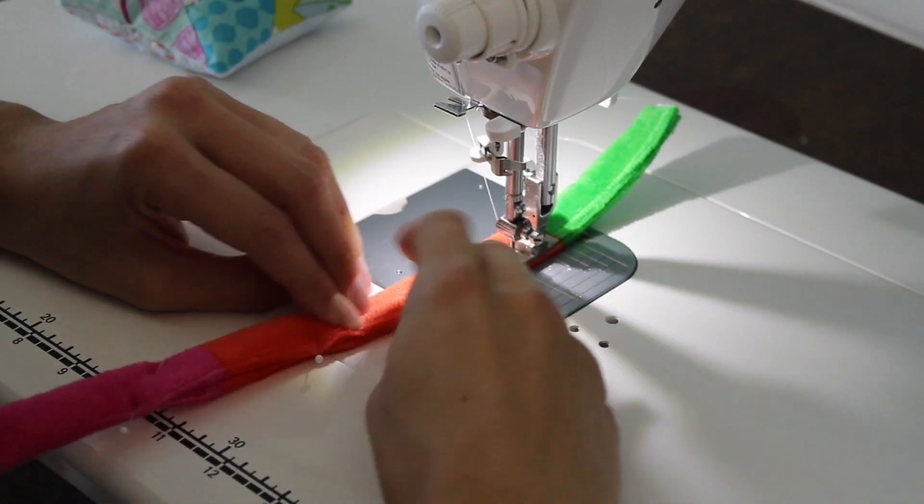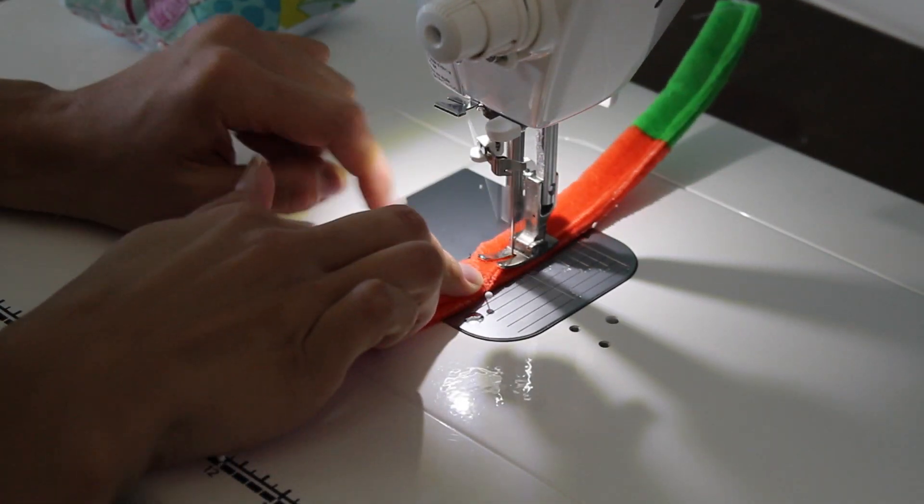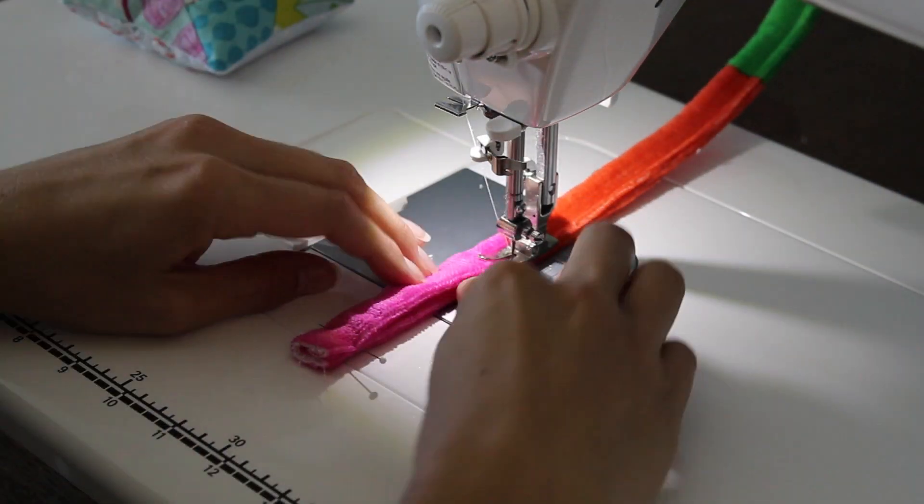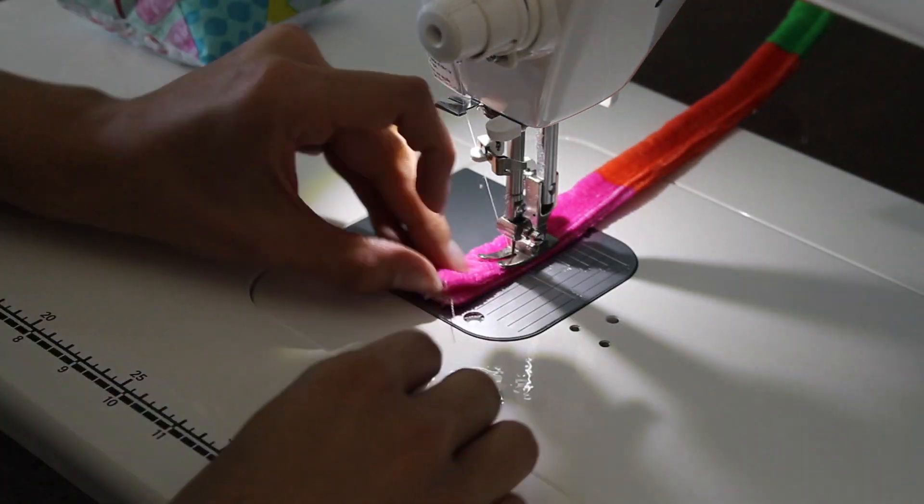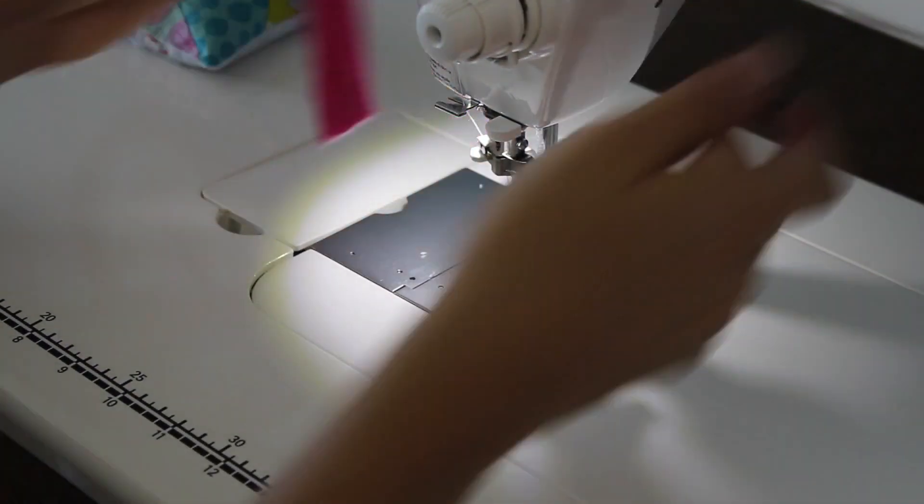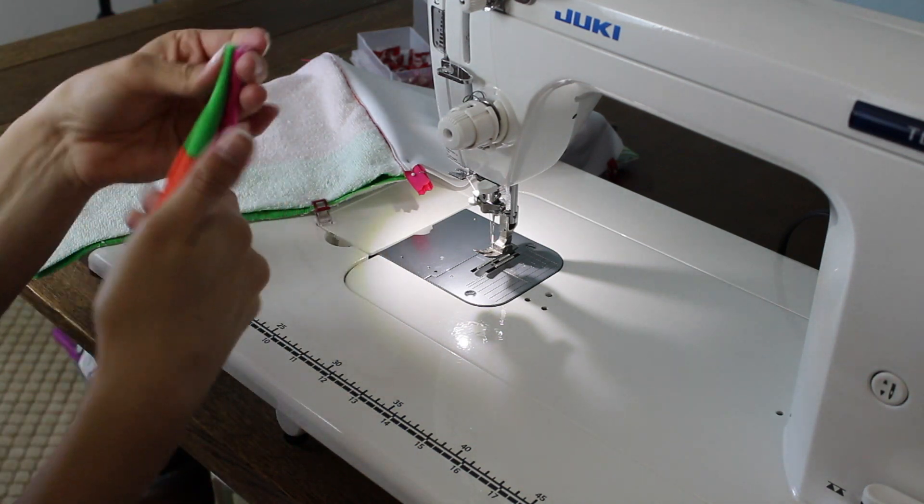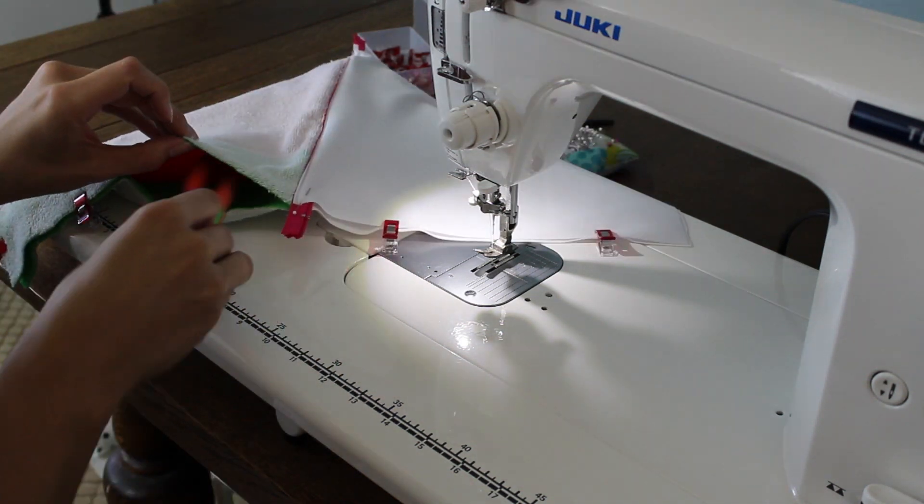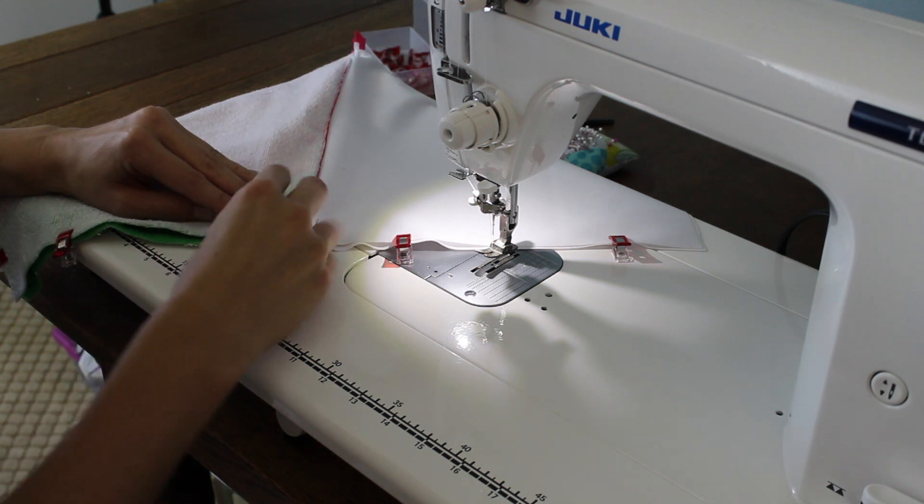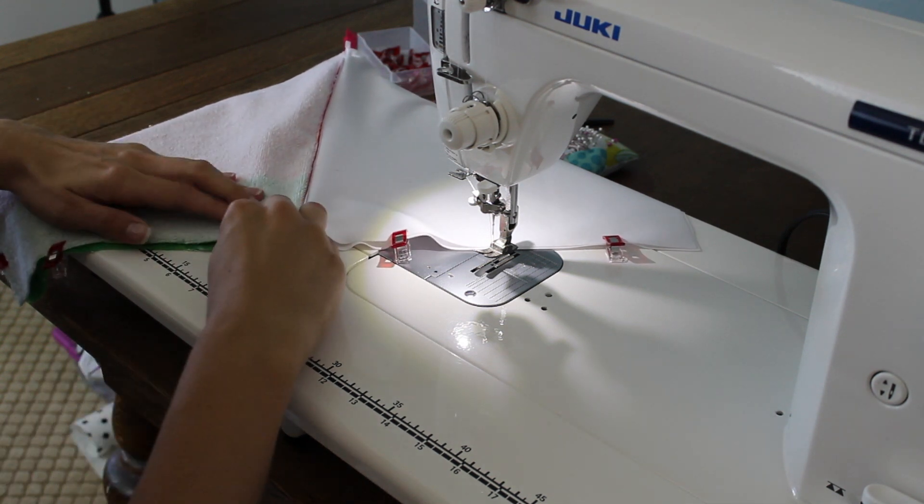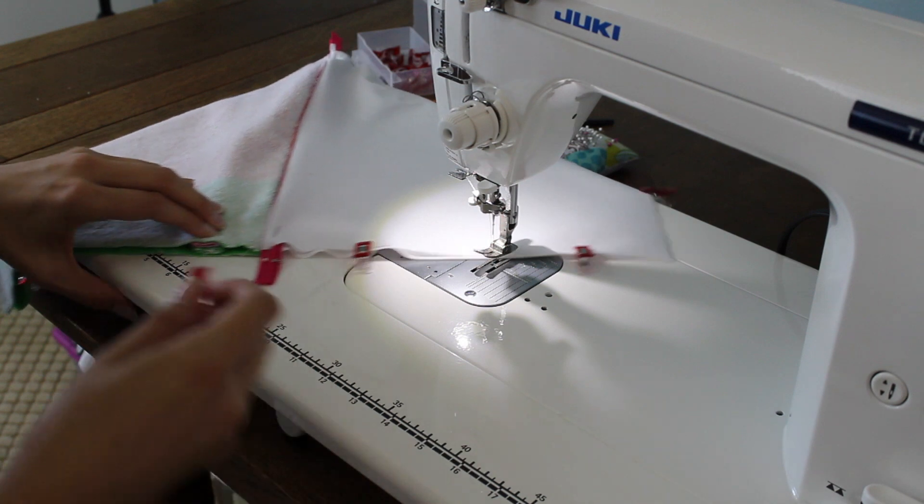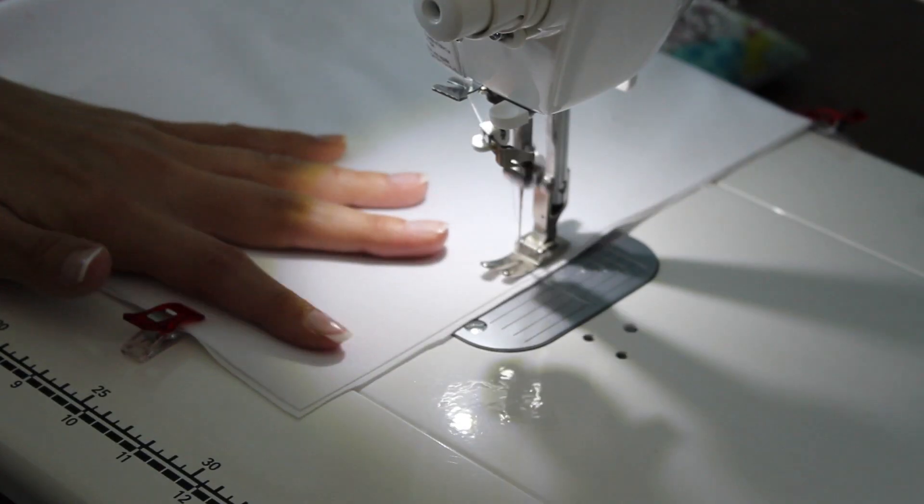And then you can take that over to the sewing machine to sew that all together. If your machine has a hard time sewing all these layers together, you can use regular cotton or find another solution for your handle. Now you want to test the size. Make sure that it's the right size that you want. And then you're going to attach that right underneath the zipper where the zipper pull will be when the zipper is closed.